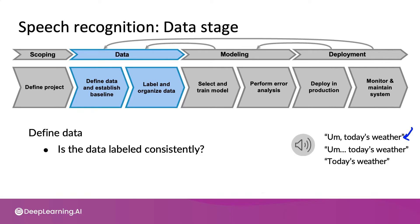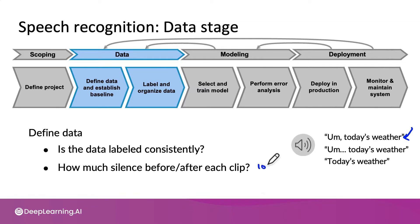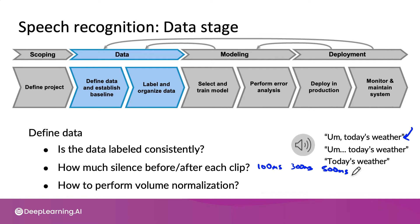Other examples of data definition questions: for an audio clip like 'today's weather,' how much silence do you want before and after each clip? After a speaker stops speaking, do you include 100, 300, or 500 milliseconds of silence? And how do you perform volume normalization? Some speakers speak loudly, some are softer, and there's the tricky case of a single audio clip with very loud and very soft sections. These are all data definition questions.